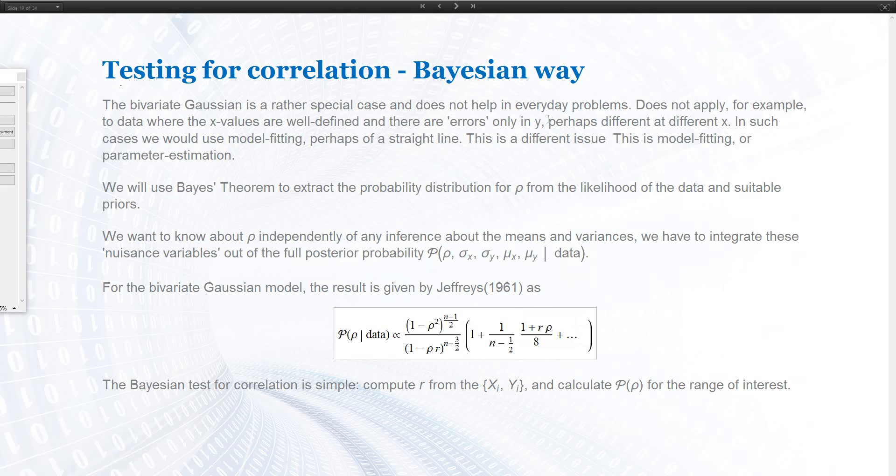We saw how we compute the correlation and if you have some data and compute the correlation, you can also, like with all the other point estimates, test how significant your sample correlation is. We can do this using the Bayesian approach as shown here.